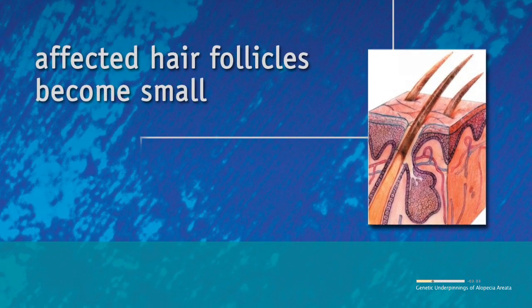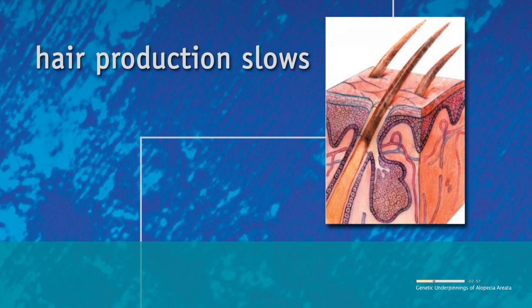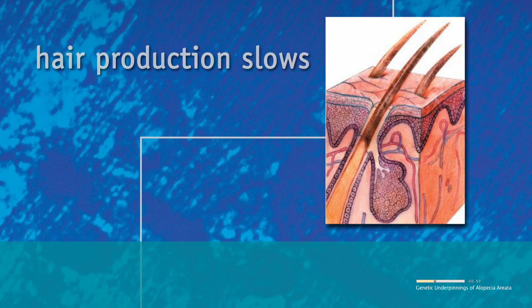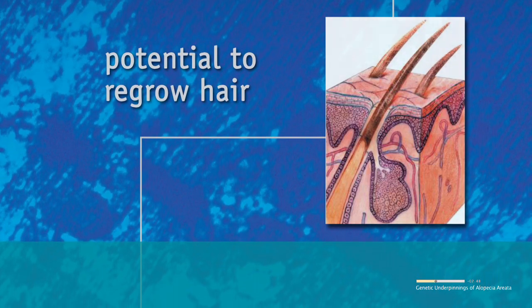In alopecia areata, immune system cells attack the rapidly growing cells in hair follicles. The affected hair follicles become small and hair production slows drastically. Fortunately, the stem cells that supply the follicle with new cells do not seem to be targeted. Therefore, the follicle always has the potential to regrow hair.